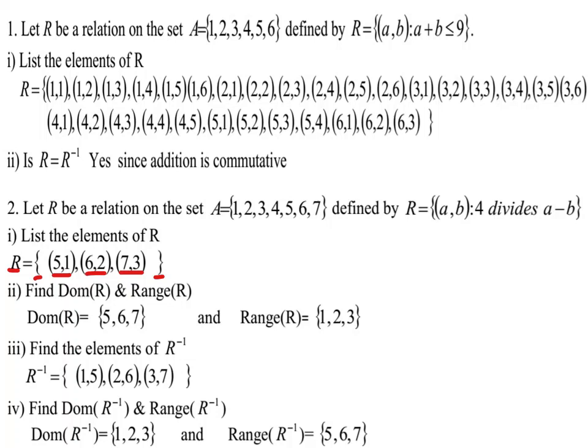Four divides 5 minus 1 since 5 minus 1 equals 4, and four divides 4. Also, 6 minus 2 is 4, so four divides 4. And 7 minus 3 is 4, so four divides 4. Therefore the elements of R are the ordered pairs (5,1), (6,2), and (7,3).